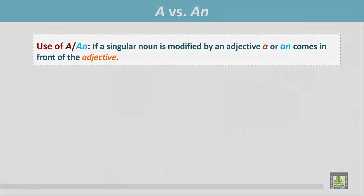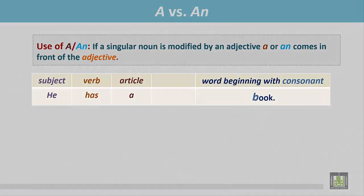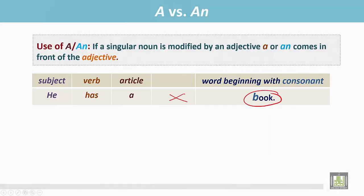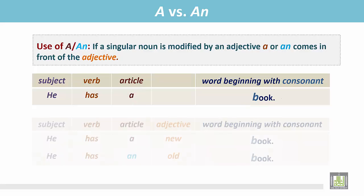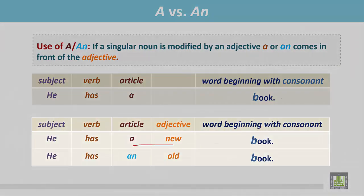A vs AN — Use of A or AN. If a singular noun is modified by an adjective, A or AN comes in front of the adjective. For example: He has a book. This is a singular noun and it is not modified by any adjective. The word begins with the consonant, so we place the article A. He has a new book. The word book begins with a consonant, but it is modified by the adjective new, which also begins with a consonant. So we place article A before the adjective new.